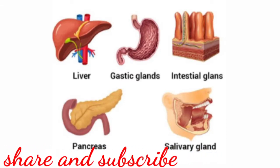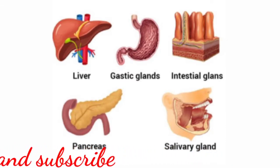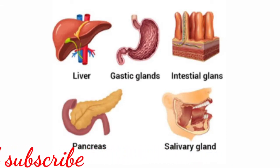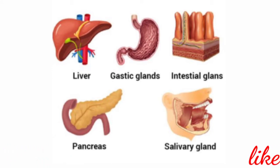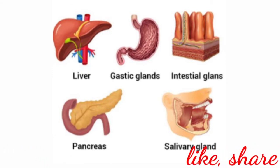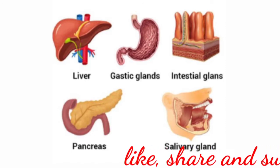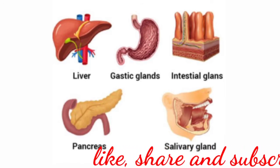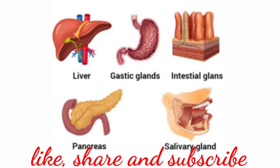Digestive glands include salivary glands, gastric glands, liver, and pancreas. The stomach has gastric glands secreting gastric juice, and the intestinal mucosa secreting intestinal juice.